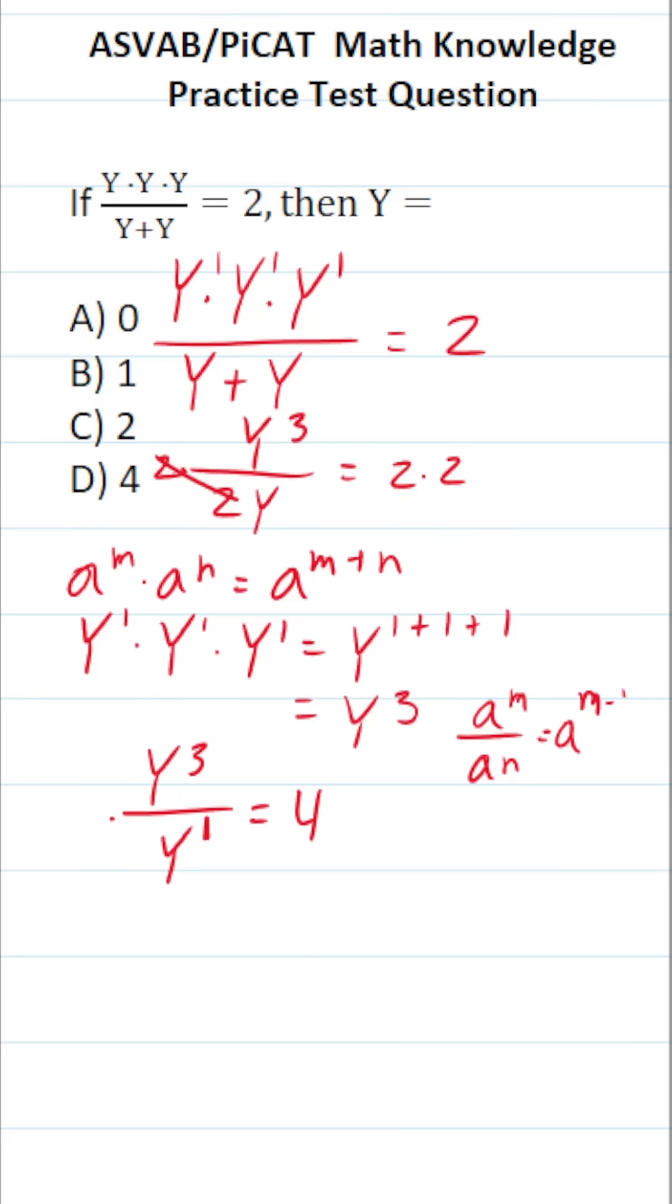So in this case, y to the third over y to the first is the same thing as y to the 3 minus 1 equals 4. y to the 3 minus 1 is y squared equals 4.